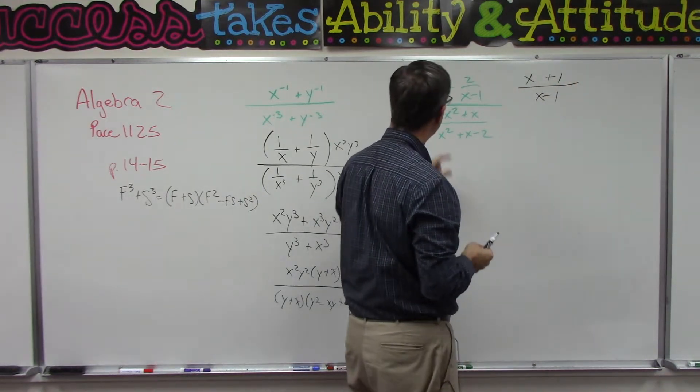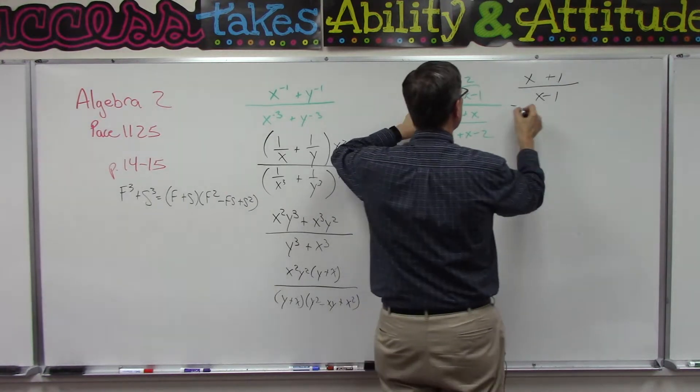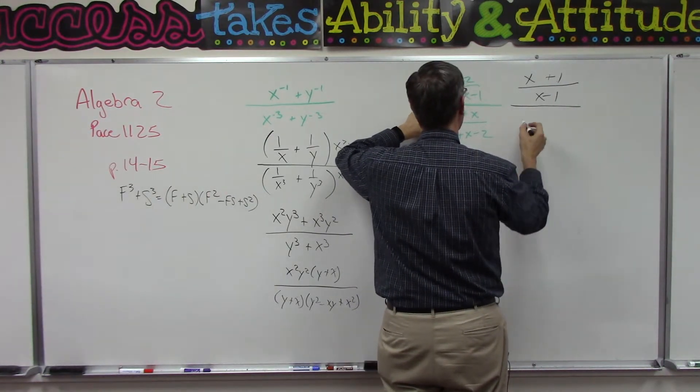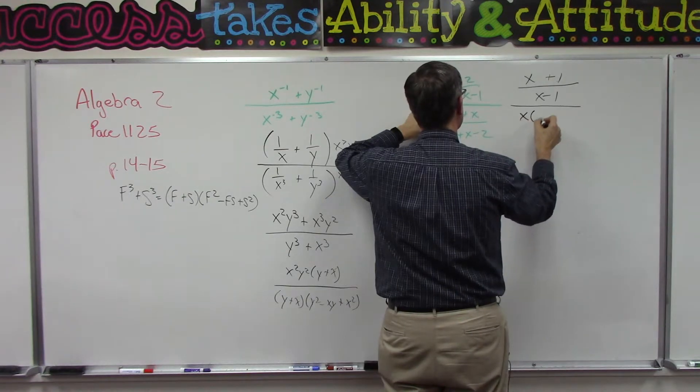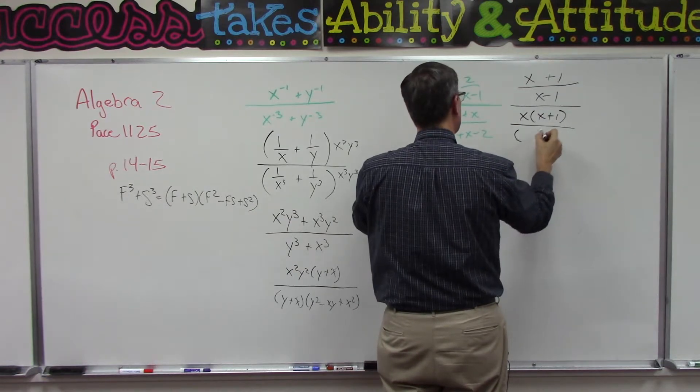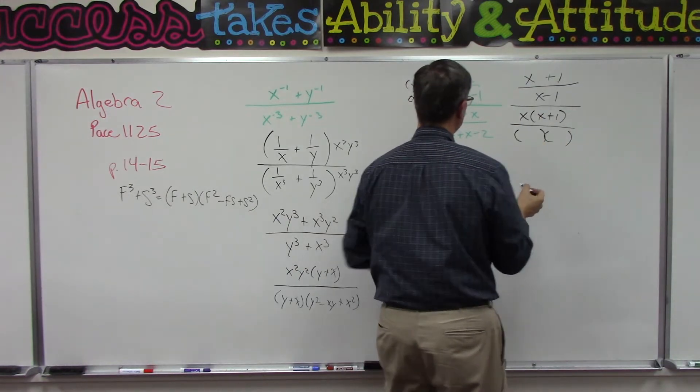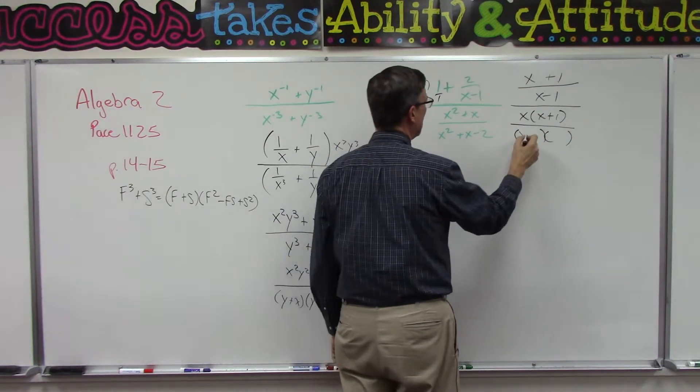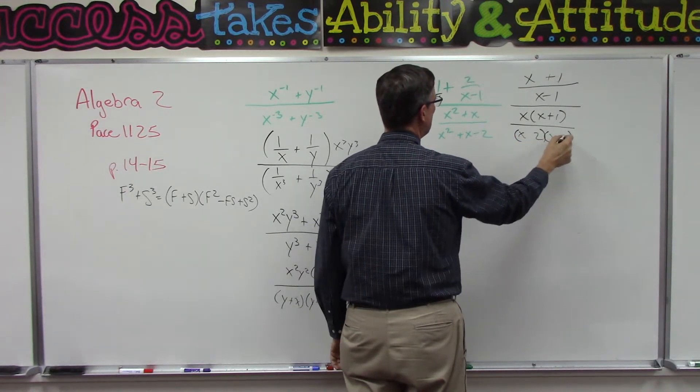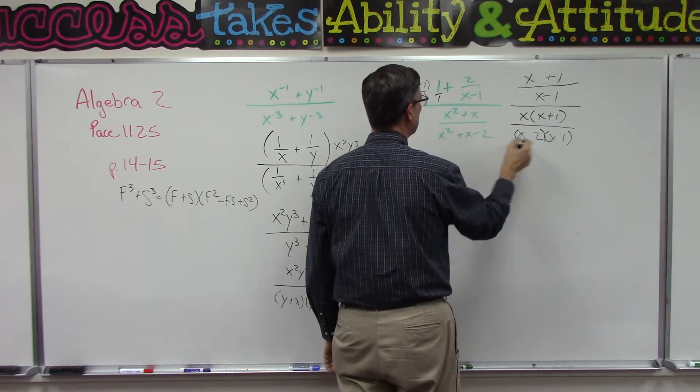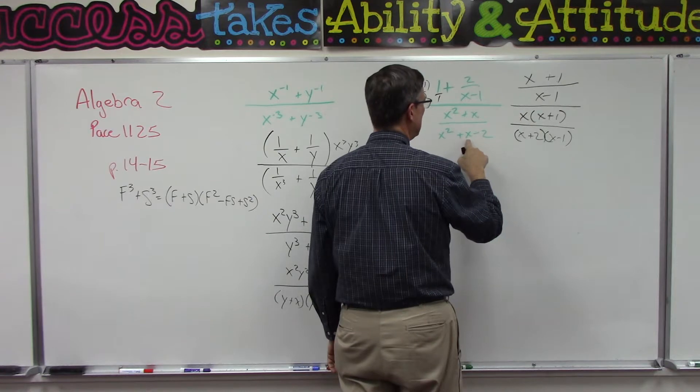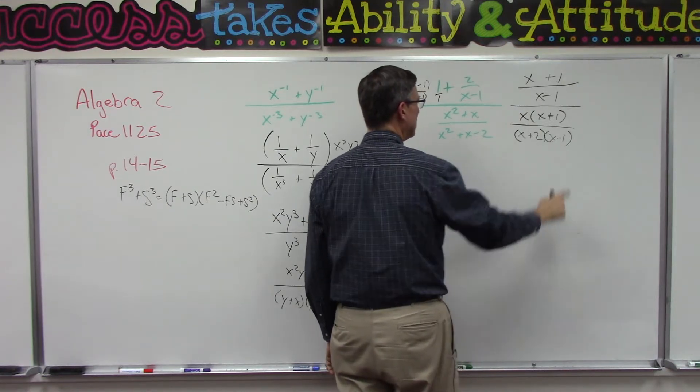Now let's figure out if we have any common factors here. In the denominator, X times X plus one over, then we're going to factor this and see what I get. X, X, one of these has to be two and one of these one. I want the middle term so positive negative, that will give me a positive one in the middle, negative two for our last term.